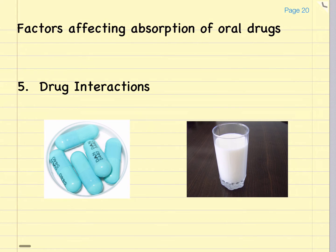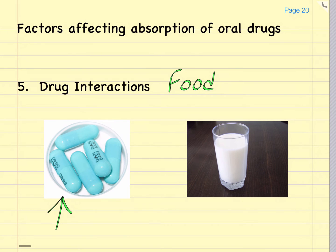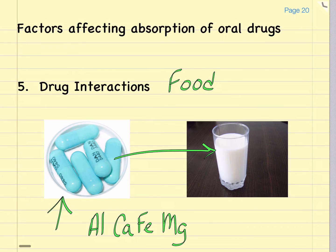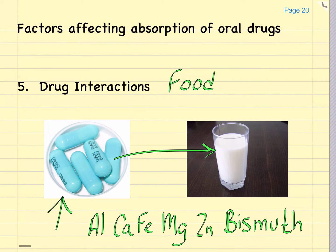Another factor that can affect absorption of an oral drug is drug interactions or food interactions. Certain oral drugs, when combined with either other drugs or foods, will have decreased absorption due to either binding of a drug with something or a change in the chemical nature of a drug. The best example is the group of antibiotics called the tetracyclines, which includes doxycycline and oxytetracycline. When taken with milk, antacids, or any other products that contain aluminum, calcium, iron, magnesium, zinc, or bismuth, the tetracycline becomes chelated with the cations, which will reduce its absorption. It's recommended that all oral tetracycline antibiotics be given at least one to two hours either before or after one of these products.